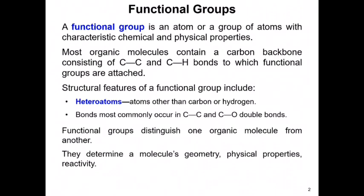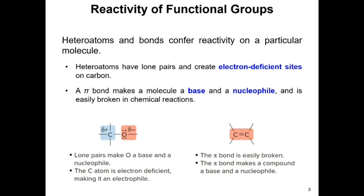These functional groups distinguish one organic molecule from other organic molecules. For example, you can have an amine group because you have amino acids, a carboxylic acid group, or an alcohol group — they each have a specific group of atoms. These functional groups can determine a molecule's geometry, physical and chemical properties such as reactivity. Heteroatoms and bonds confer reactivity on a particular molecule, and you can think of them as reactive sites.